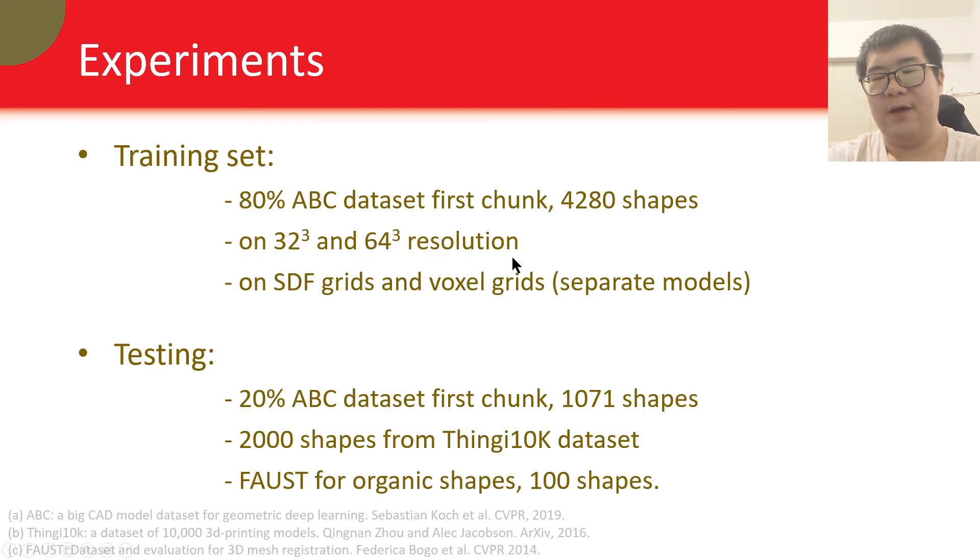Now the experiment part. We have trained our network on 80% of the first chunk of the ABC dataset. We only discretize the data into 32-cubed and 64-cubed resolution for training. And we train individual models for SDF-grid and voxel-grid input. For testing, we have 20% of ABC first chunk. We also have 2000 shapes from ShapeNet dataset, to test the generalizability of our model on new datasets. And we have 100 shapes from FAMOUS to test our model on organic shapes.